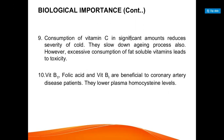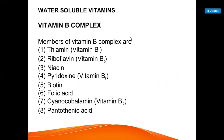Vitamin B12, folic acid, and vitamin B6 help reduce coronary artery disease risk by lowering plasma homocysteine levels. Water-soluble vitamins include the B complex group: B1 (thiamin), B2 (riboflavin), B3 (niacin), B5 (pantothenic acid), B6 (pyridoxin), B9 (folic acid), and B12 (cyanocobalamin). The entire B complex falls under water-soluble vitamins, except vitamin B12 which is stored in the body.